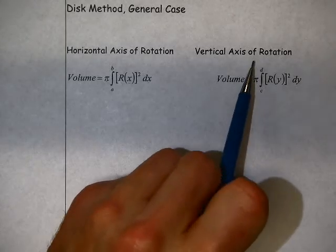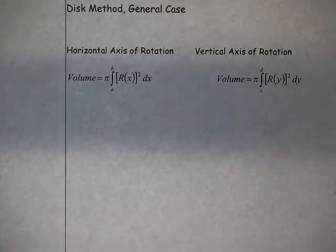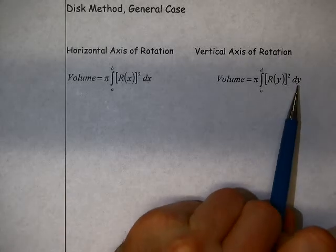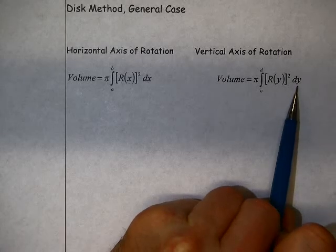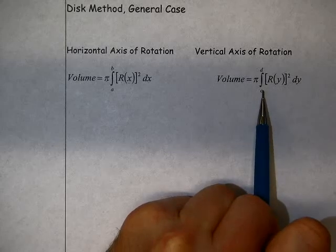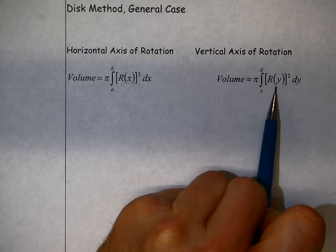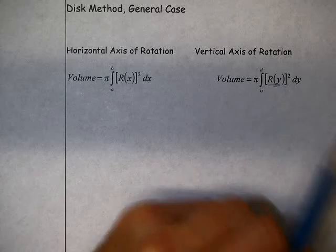If we have a vertical axis of rotation, so if we're revolving or rotating around the y-axis or some line with the equation of x equals a constant, then we're going to integrate with respect to y. We're going to go from one y value to the other, the lower limit to the upper limit, pi r squared, but now r is a function of y.